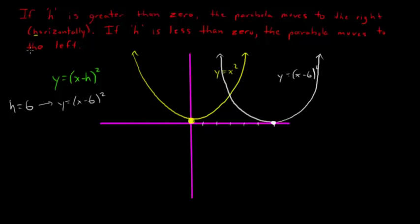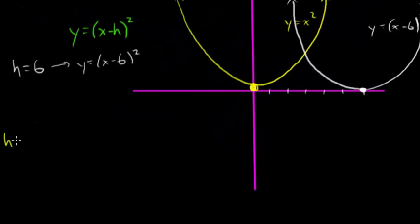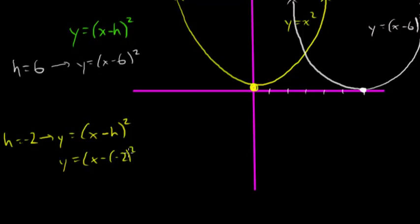And we can say the same for moving in the other direction. So perhaps h is negative 2. Well, how would we write that? Remember that h is going to look different than what you expected. So y equals x, so if it's x minus h, and h is negative 2, then what you might say is x minus negative 2. But we know that subtracting a negative is the same as adding, so that's going to be x plus 2.